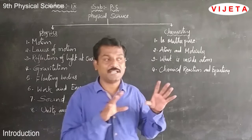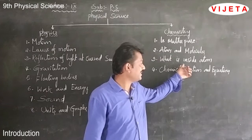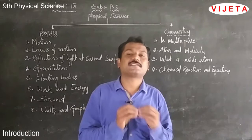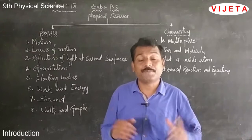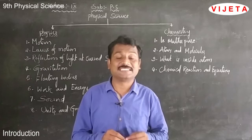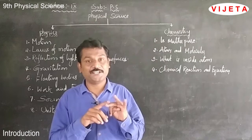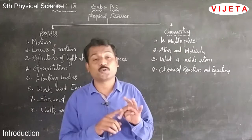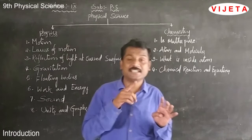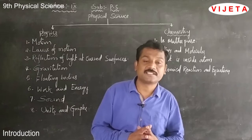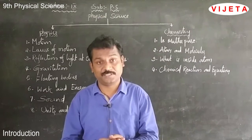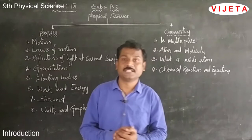Coming to the third chapter, what is inside the atom. We know an atom is the smallest indivisible particle, but there are also particles present inside the atom called subatomic particles. We have more than 60 subatomic particles, but the three most prominent ones are electrons, protons, and neutrons. We are going to discuss these subatomic particles — their mass, charge, e/m value, and how they are arranged inside an atom. Different scientists gave different atomic theories: JJ Thomson, Rutherford, and Niels Bohr.